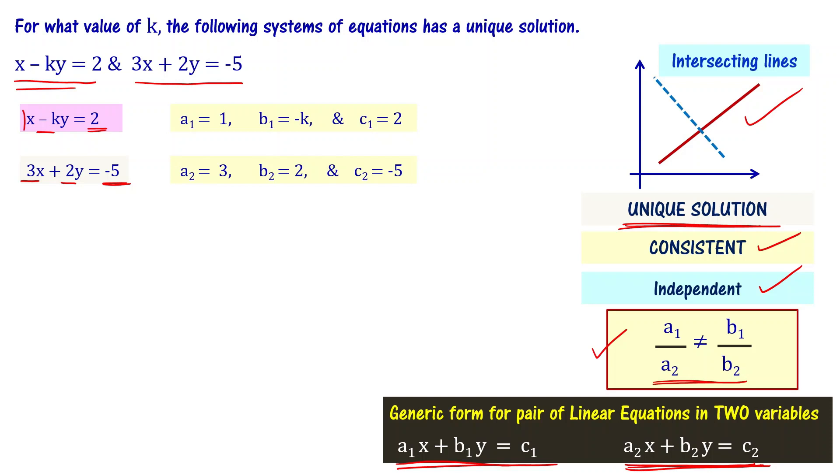Now we have a1, a2, b1, b2. As per this relation, a1 by a2 should not be equal to b1 by b2. So 1 by 3 is not equal to minus k by 2. This means minus k is not equal to 2 by 3. Therefore k is not equal to minus 2 by 3. For all k values except minus 2 by 3, you will have a unique solution.